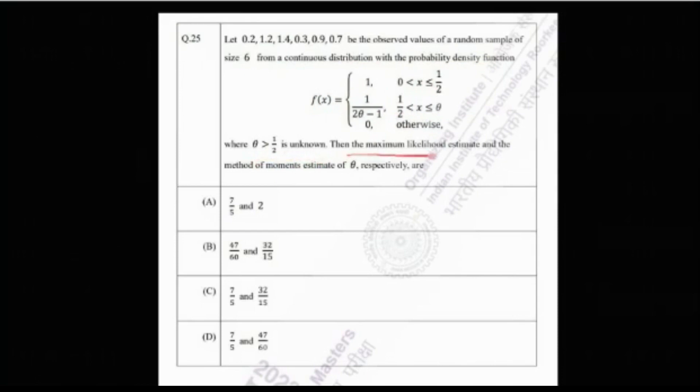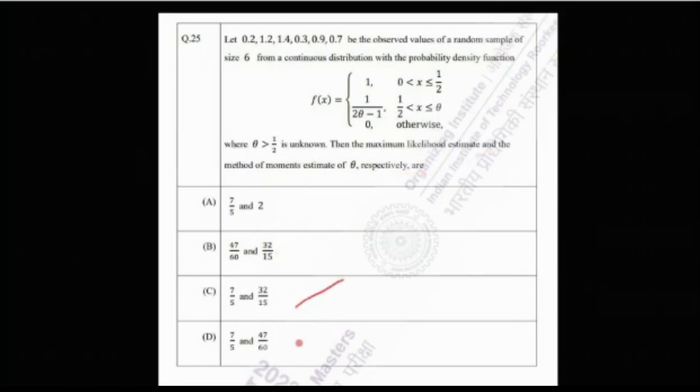We need to find the maximum likelihood estimate and the method of moments estimate of theta. There are four options, so we need to find the MLE and the MME of theta.